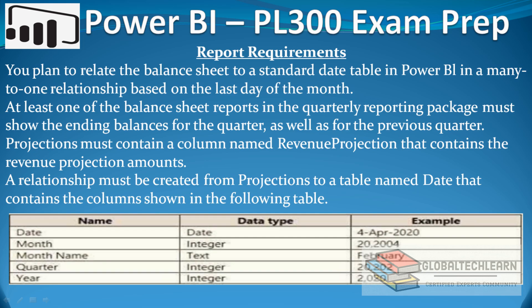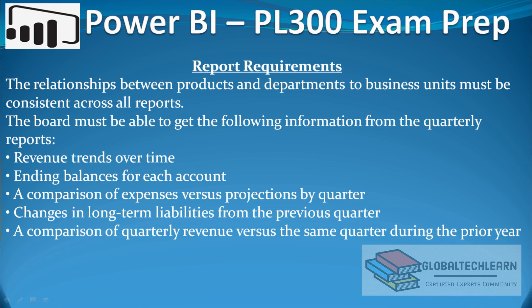The Date table needs fields like Date, Month, Month Name, Quarter, and Year. The relationship between products and departments to business unit must be consistent across all reports. The board must be able to get the following information from the quarterly reports: revenue trends over time, ending balances for each account, a comparison of expenses versus projections by quarter, changes in long-term liabilities from the previous quarter, and a comparison of quarterly revenue versus the same quarter during the prior year.